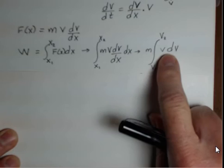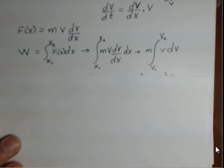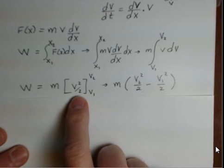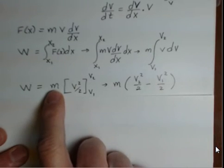This is a straightforward anti-derivative, v to the first power. When we take an anti-derivative, the power goes up by one and we divide by the new power. So again, the mass that's out in front stays there.